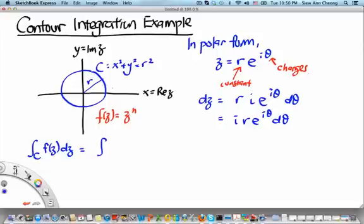because when I change the complex number z along this contour, I'm only changing theta, but not r. So this is an integral with respect to theta. And it goes from theta equals 0 to theta equals 2 pi.